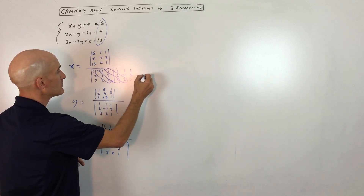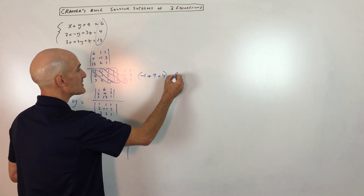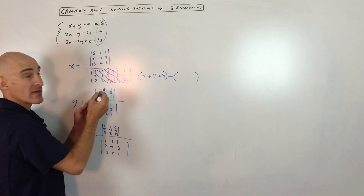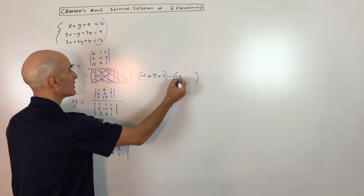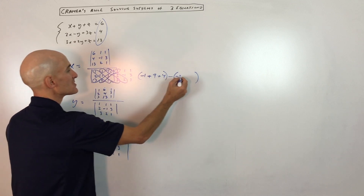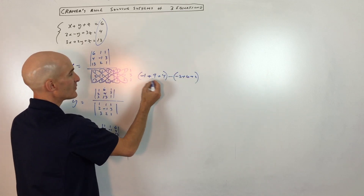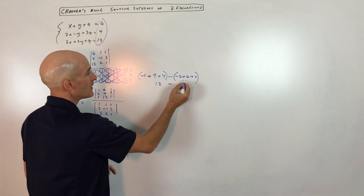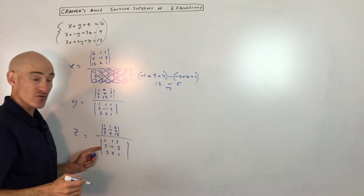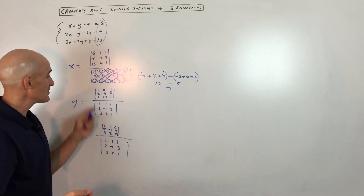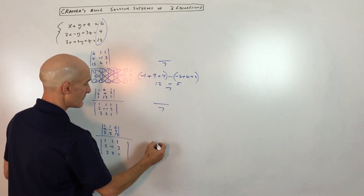So that gives us negative 1 plus 9 plus 4. Then we subtract the diagonals going up to the right: 3 times negative 1 times 1 is negative 3, 2 times 3 times 1 is 6, and 1 times 2 times 1 is 2. Simplifying: 13 minus 1 is 12, and 8 minus 3 is 5, and 12 minus 5 is 7. So the denominator for all three — x, y, and z — is 7.